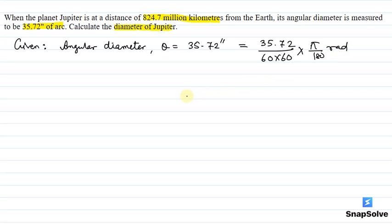We have to know the distance. The distance is given as 824.7 million kilometers, which is 824.7 times 10 to the power 6 kilometers. We need to find the diameter of Jupiter.